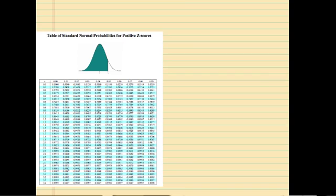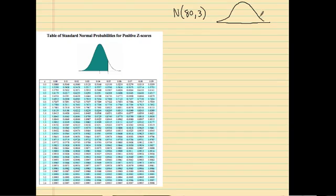Let's start off with an example. We have a normal curve where the mean is 80 and the standard deviation is 3. I'm going to draw a visual representation — a normal curve. And let's say x is equal to 84.